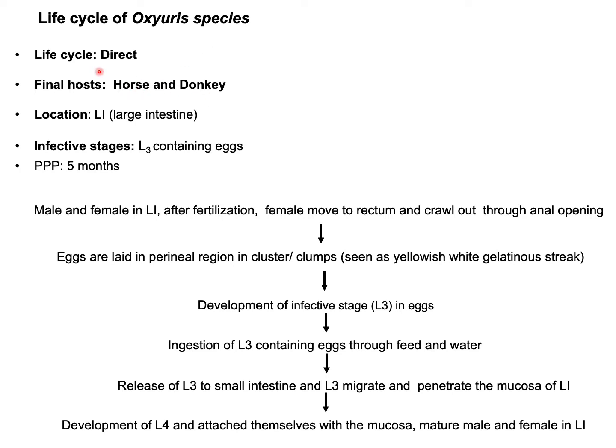The life cycle of Oxyurius equi — this parasite is very important for horse and donkey. This is a direct life cycle, meaning there is no involvement of an intermediate host. The adult parasites are located in the large intestine — that is, in the cecum, colon, and rectum. The infective stage is the L3-containing egg, and completion of the life cycle takes around five months.